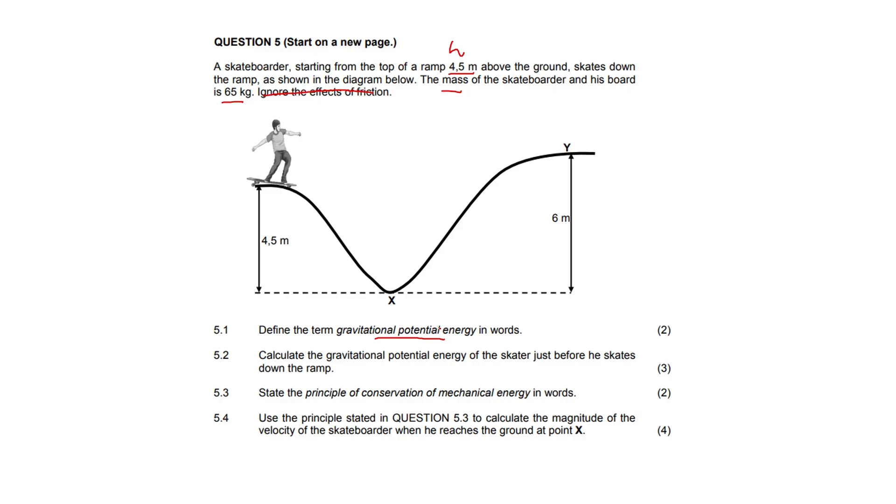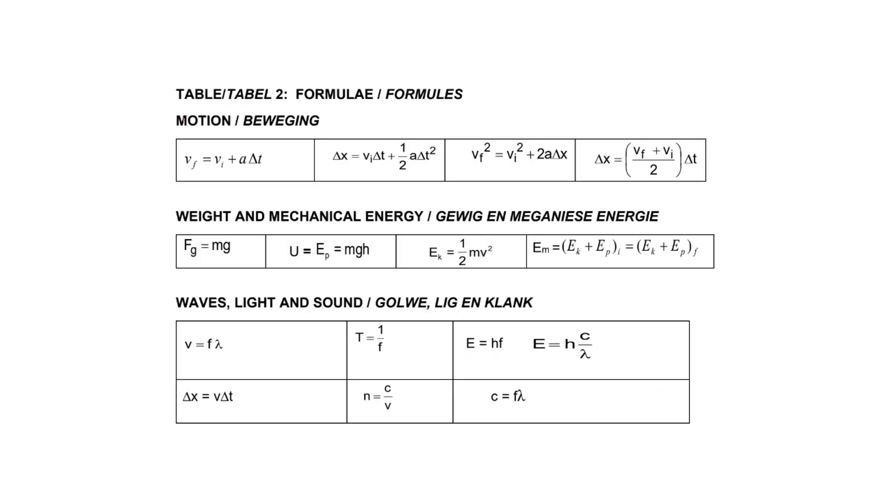Question 5.2: Calculate the gravitational potential energy of the skater just before he skates down the ramp, when he's still stationary right there. We know that gravitational potential energy is EP equals mgh. I'll show you the formula, and it's that formula right there. You just jot that down because you do get a mark for the formula.